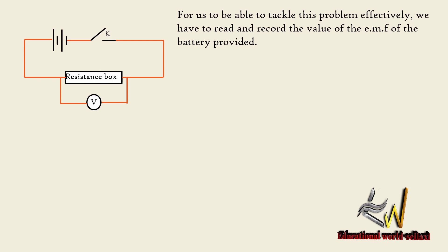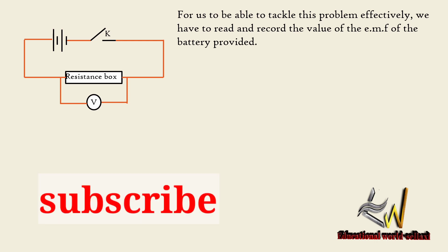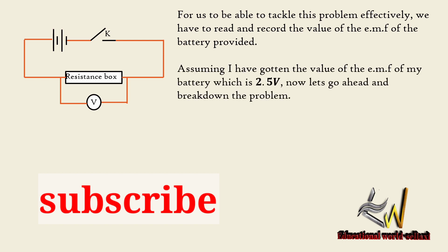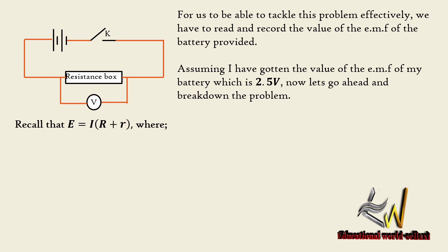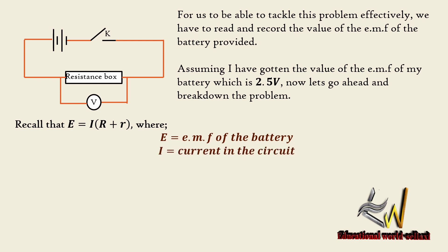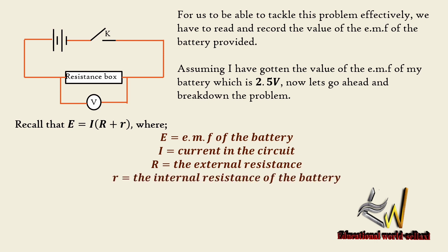To tackle this problem effectively, we have to read and record the value of the EMF of the battery provided. Assuming the EMF of the battery is 2.5 volts, we break down the problem using the formula: E = I(R + r), where E is the EMF, I is the current in the circuit, R is the external resistance, and r is the internal resistance of the battery.